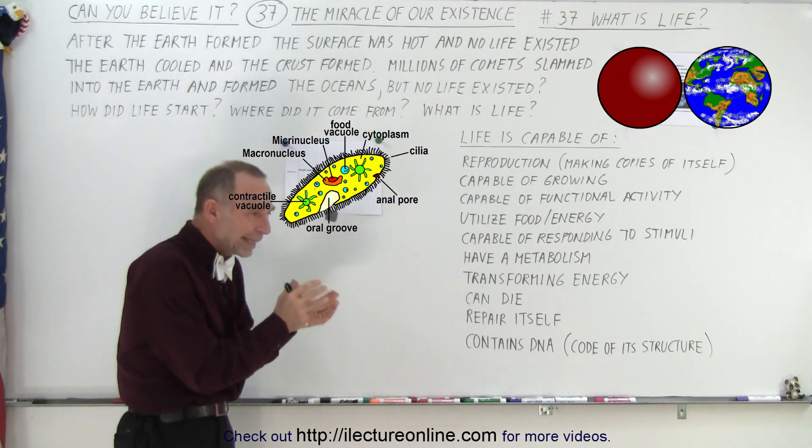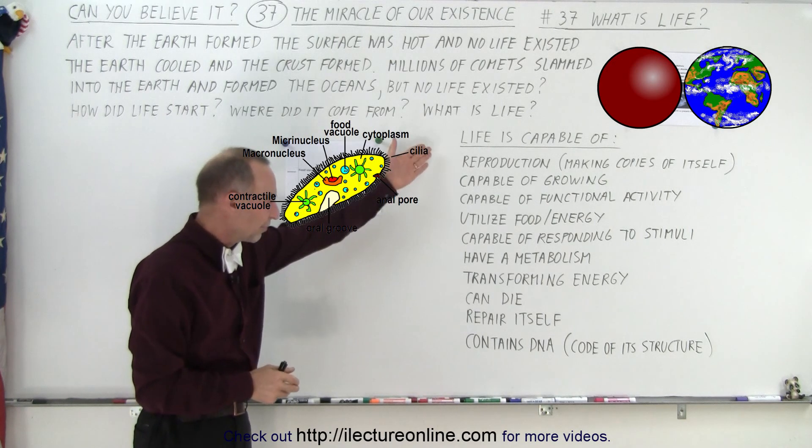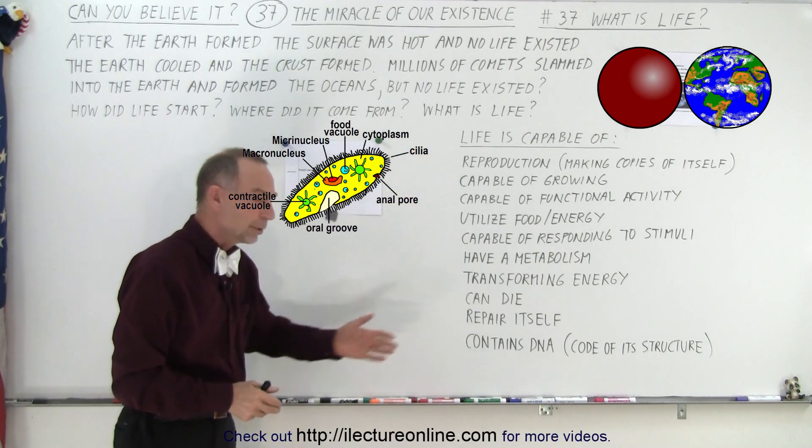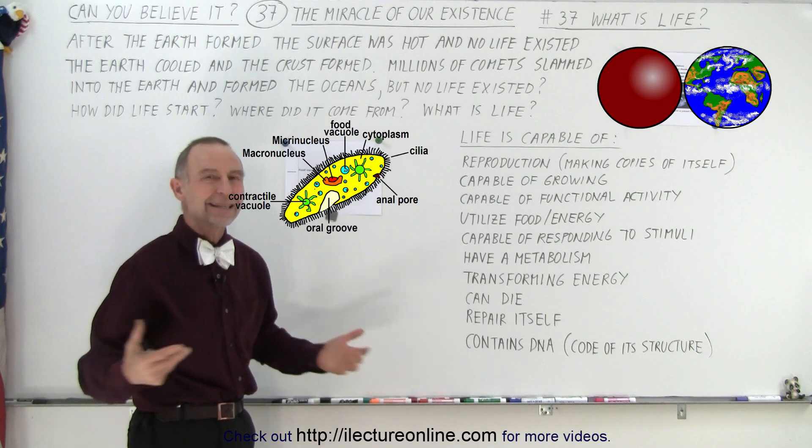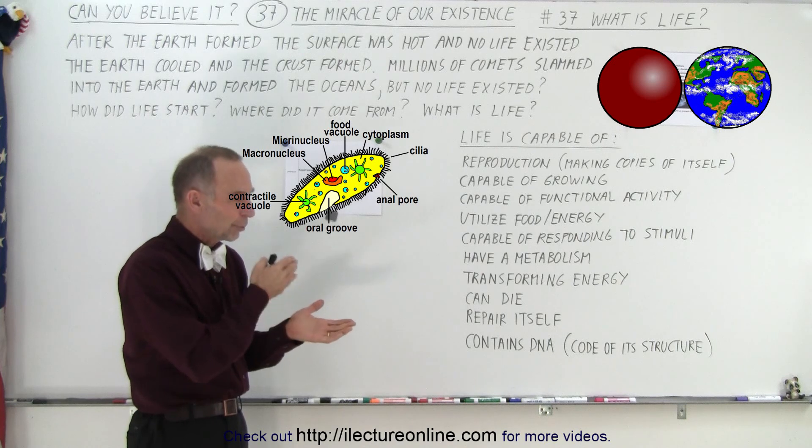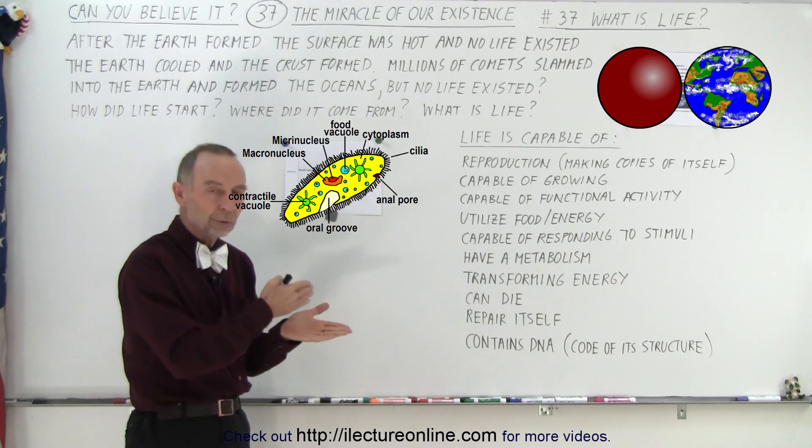But again, at the very beginning, life did not exist. Something that fills this set of categories did not exist. But now the Earth is filled with teeming life. So how did we go from an Earth with no life to an Earth with life?